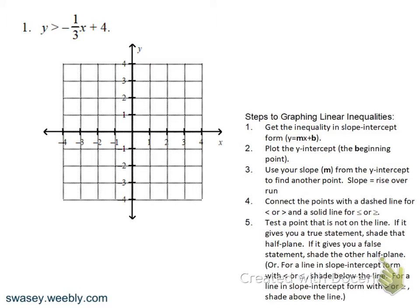In this video we're going to be graphing linear inequalities. We're going to graph them in slope-intercept form — get the y by itself in the inequality. When you have it in that form, you can identify the slope, which is negative one-third, and the y-intercept, which is four.